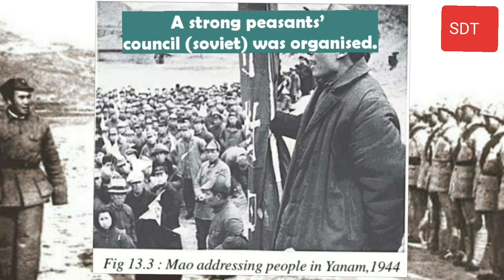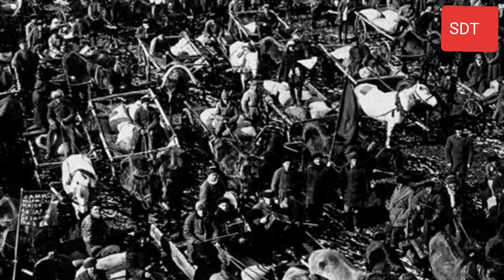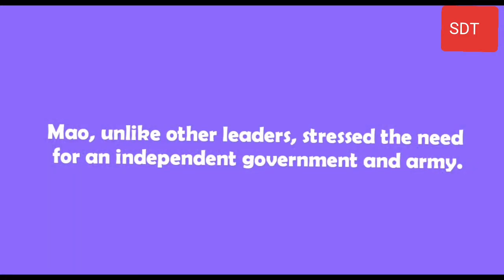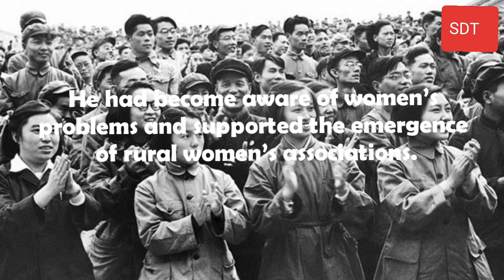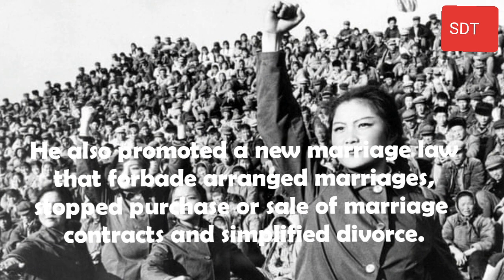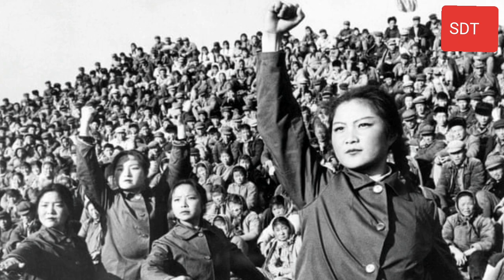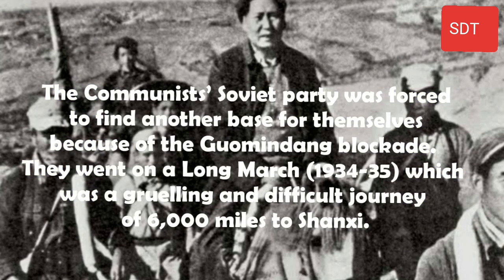A strong peasants' council (Soviet) was organized, which united through confiscation and redistribution of landlords' land. Mao, unlike other leaders, stressed the need for an independent government and army. He had become aware of women's problems and supported rural women's associations. He also promoted a new marriage law that forbade arranged marriages, stopped the purchase and sale of marriage contracts, and simplified divorce.